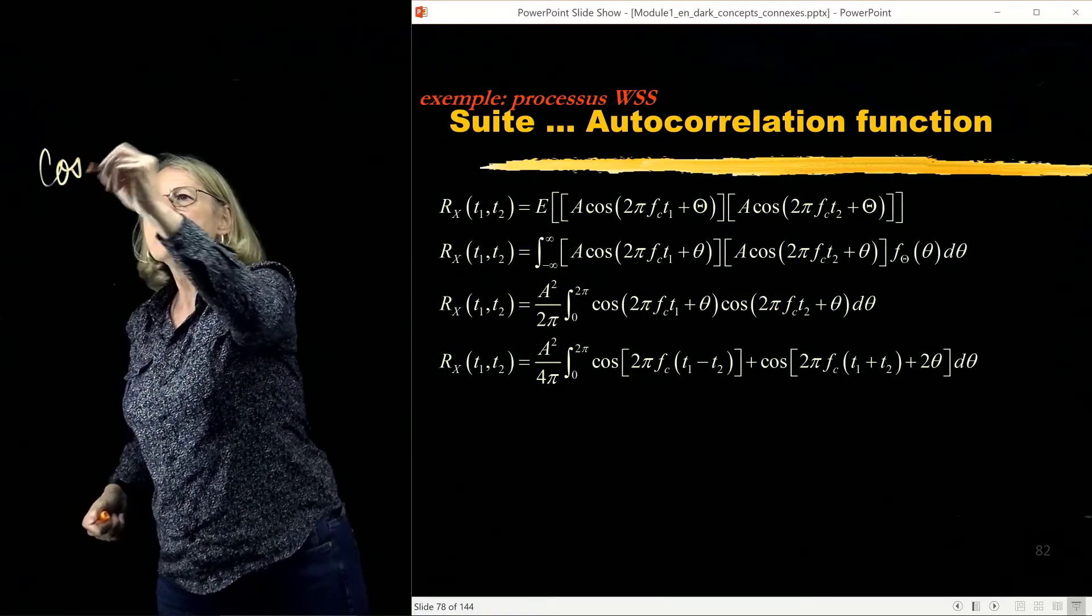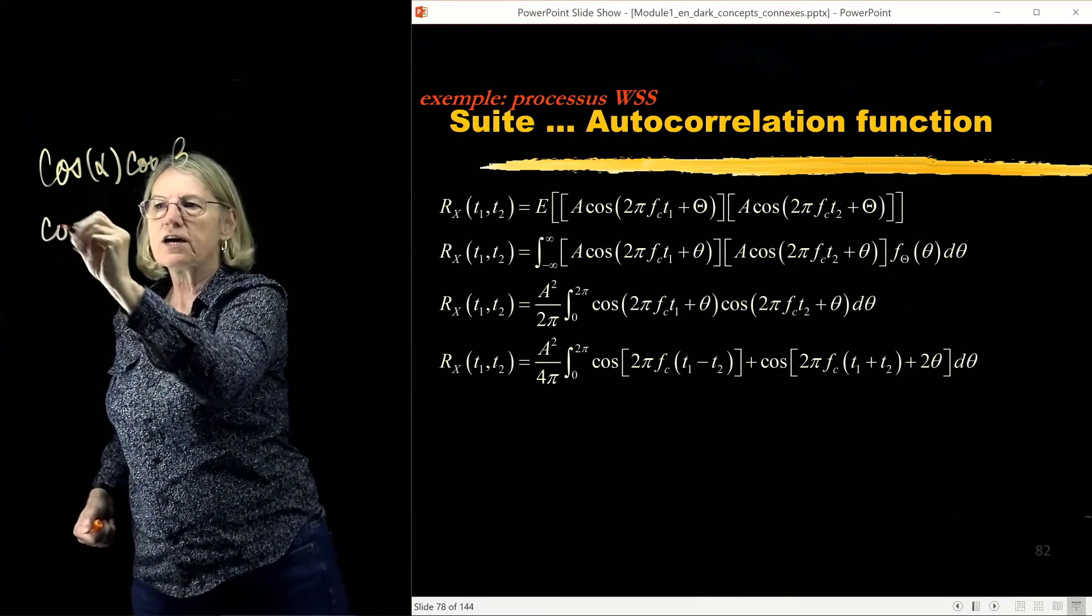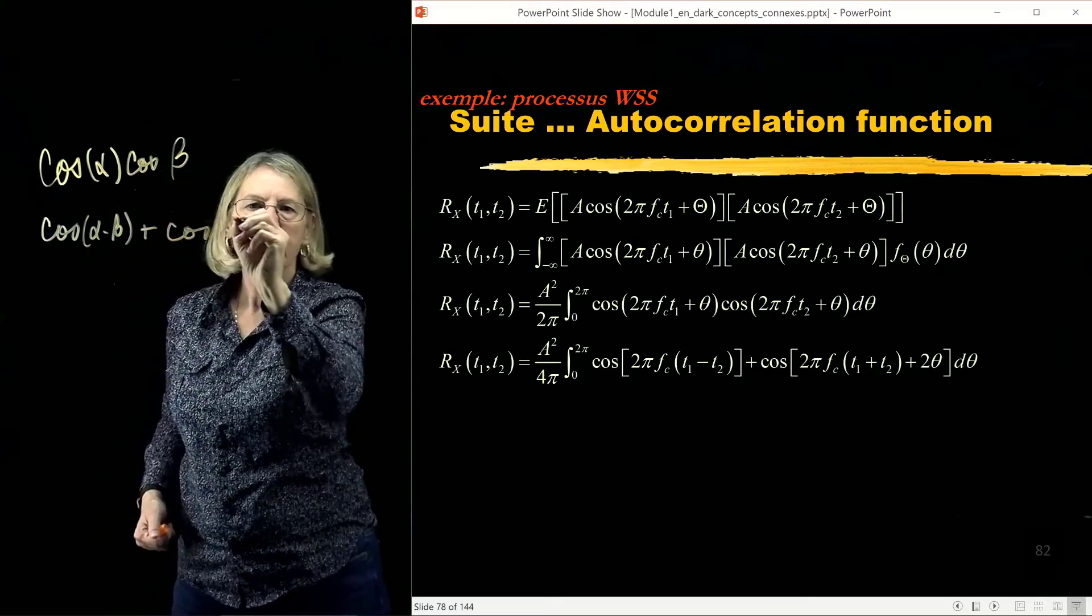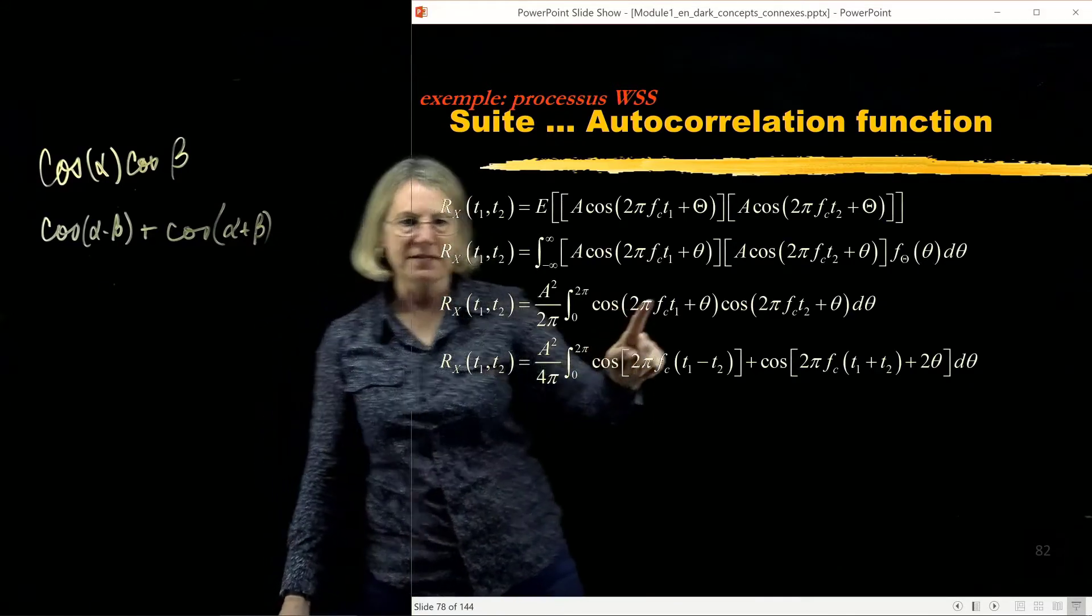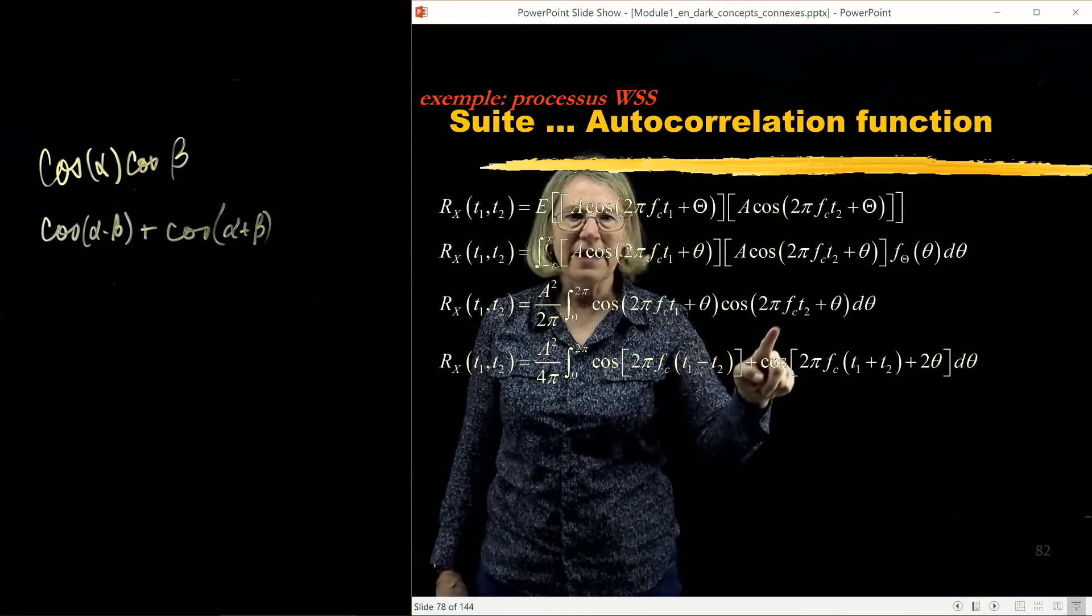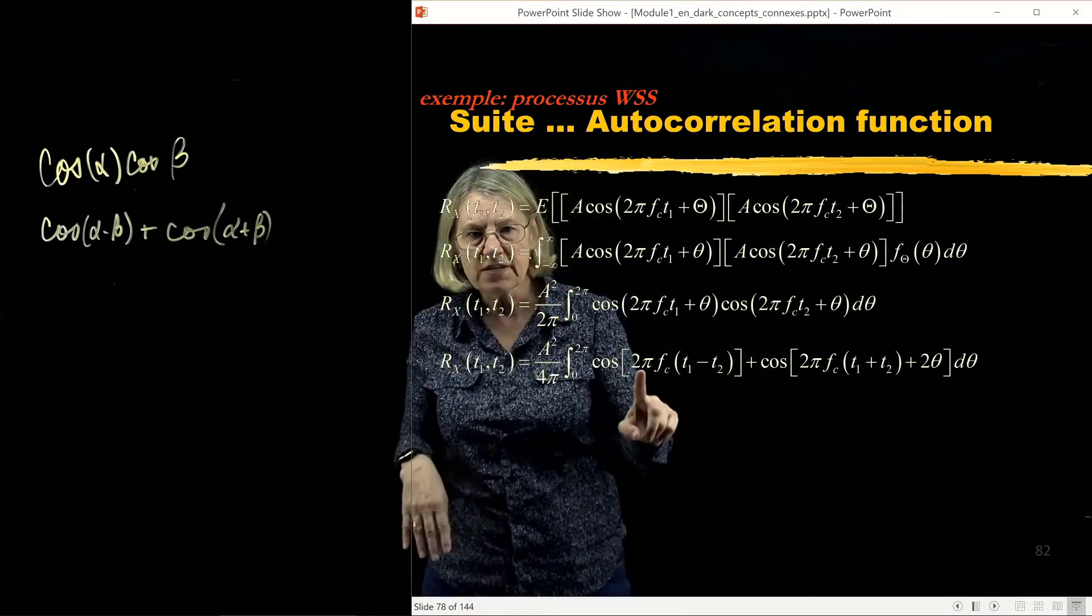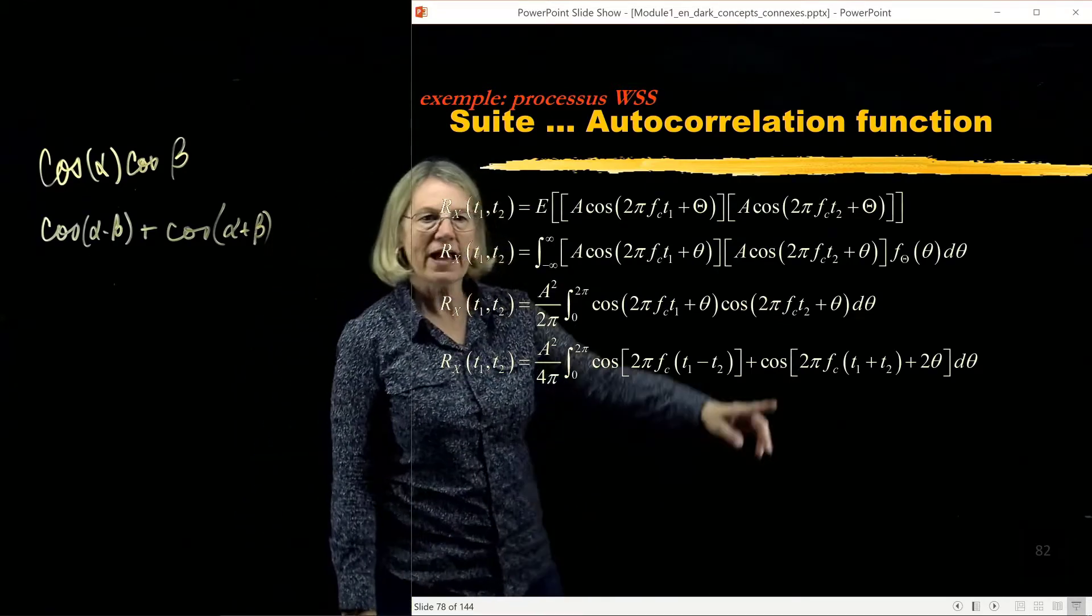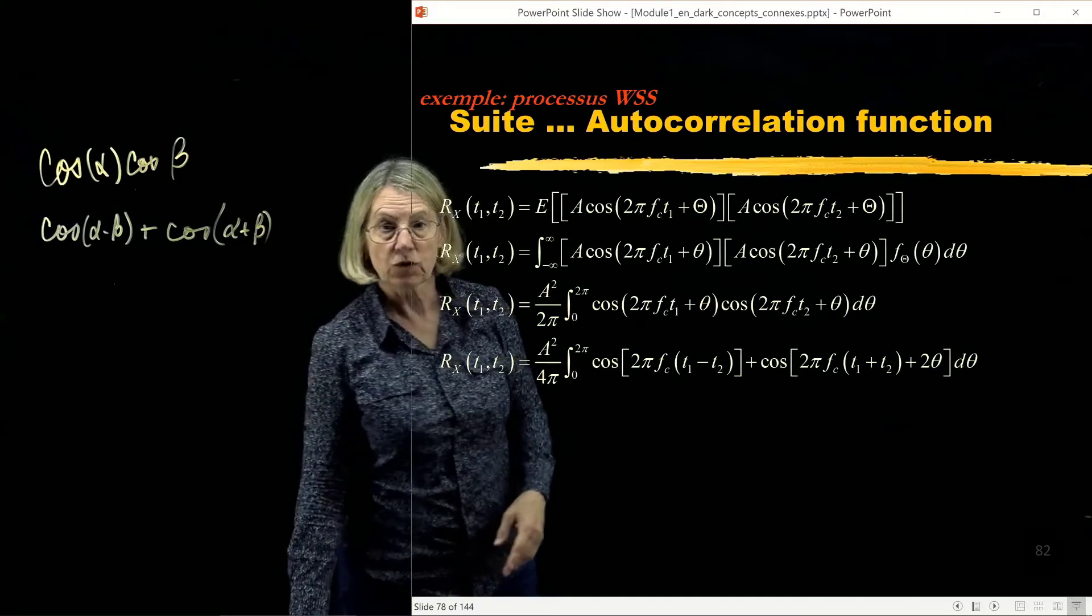The cosine of alpha times the cosine of beta is just the cosine of alpha minus beta plus the cosine of alpha plus beta. So when I have the minus what happens? Well I have t1 minus t2 and I have theta minus theta but theta minus theta is 0. So this ends up being just 2π fc times t1 minus t2. And here I have something where I have the sum.